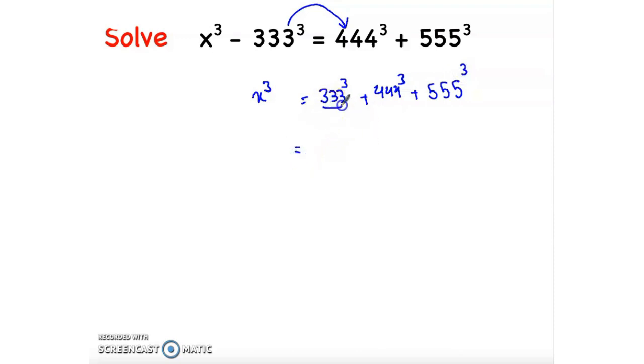Now 333 cubed equals 3 times 111 cubed, plus 444 equals 4 times 111 cubed, plus 555 equals 5 times 111 cubed.